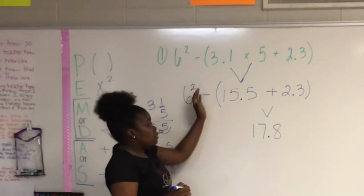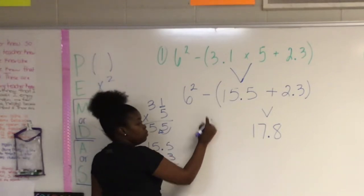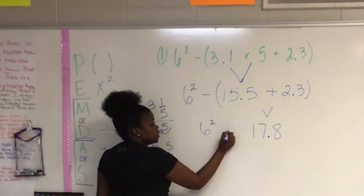Now, I am completely done with parentheses. So therefore, I can solve the rest of my problem. I'm going to bring down the 6 squared.